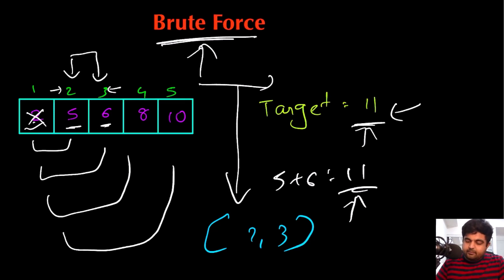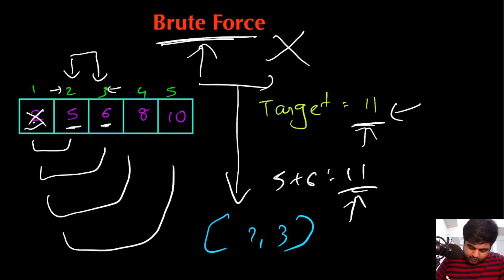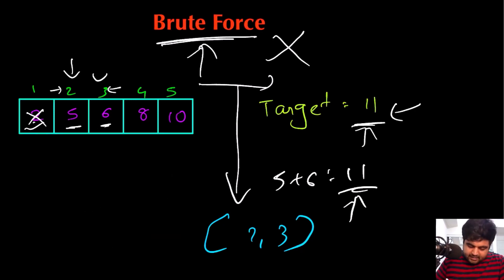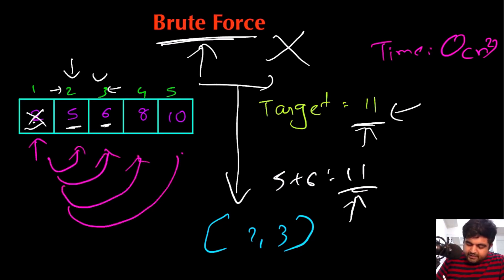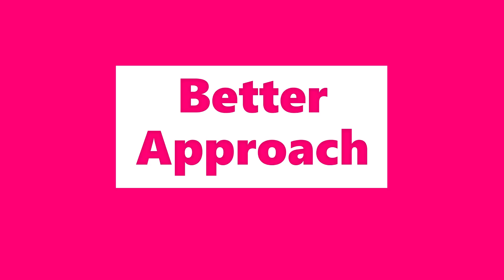This brute force solution leads to the correct answer in terms of index values, but it is not the most efficient approach because we deal with many different sub-pairs. The time complexity for the brute force approach is O(n²), because for every single value we have to compare it with all other remaining values. Let's see what a better approach would be.